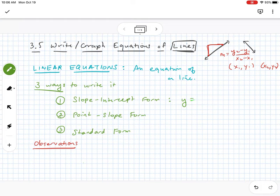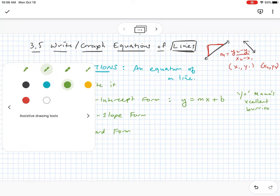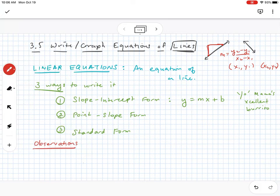Let me give these to us. The slope-intercept form would be y equals mx plus b. And I know I've said it over and over again, but it's your mama's excellent burrito. Now, the reason why it's called slope-intercept form is because there's a slope and then there's an intercept.